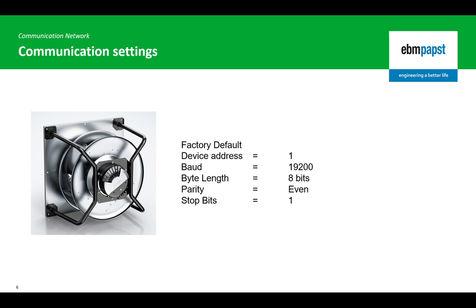If we're installing many fans on an RS485 communication network, we need to ensure that each fan has a unique device address. We also need to make sure that the baud rate, parity, and stop bits are the same for both the client and all server devices on the network to ensure successful communication.